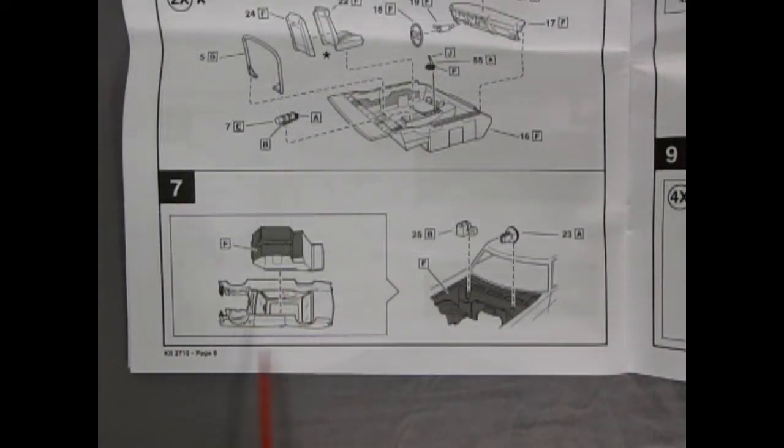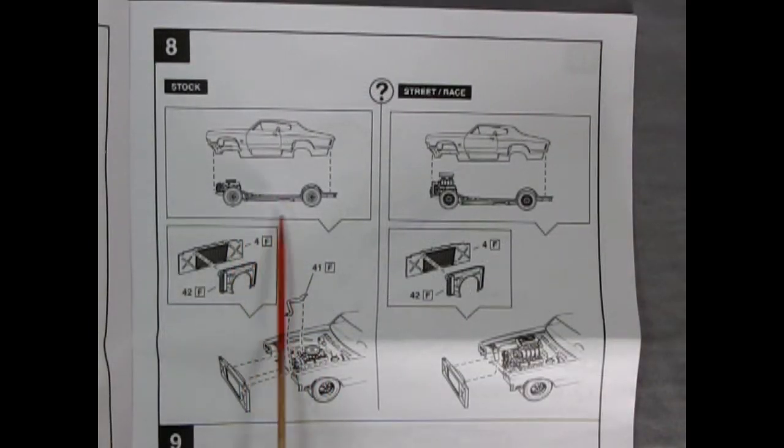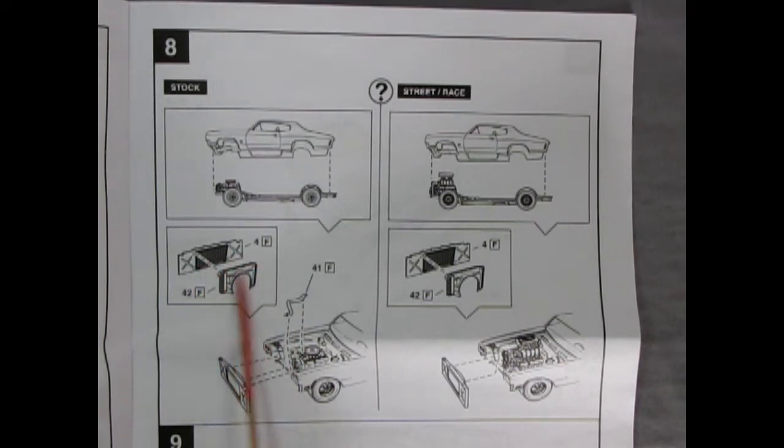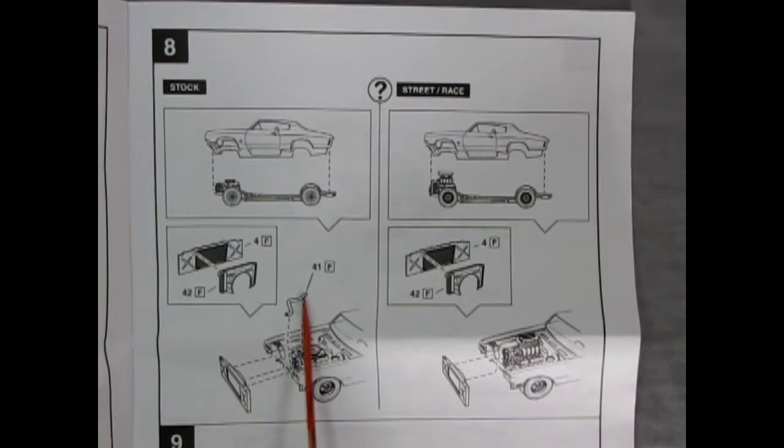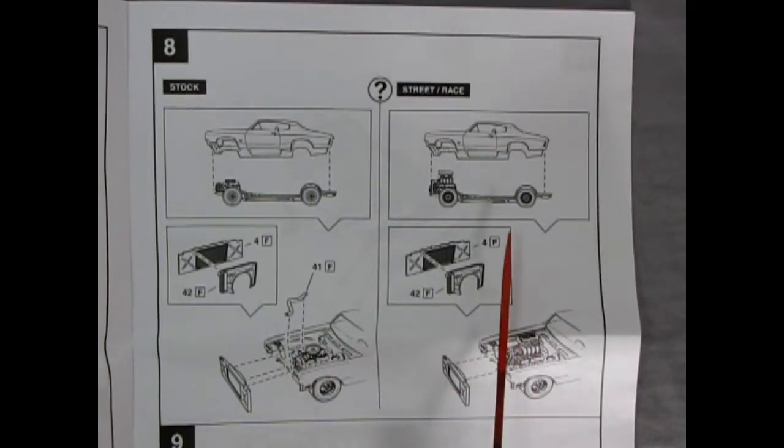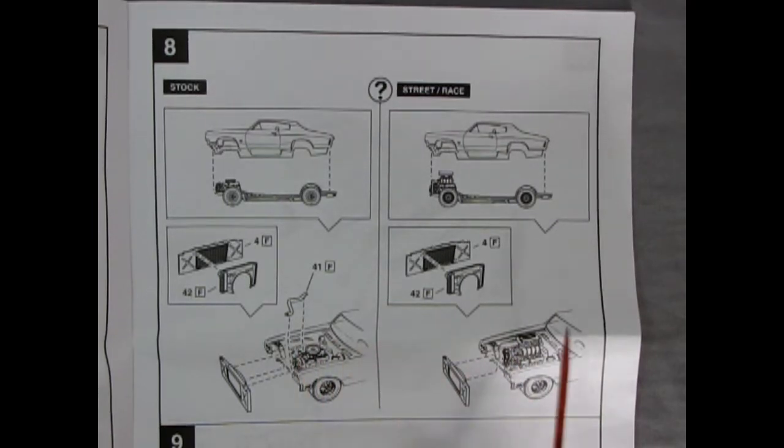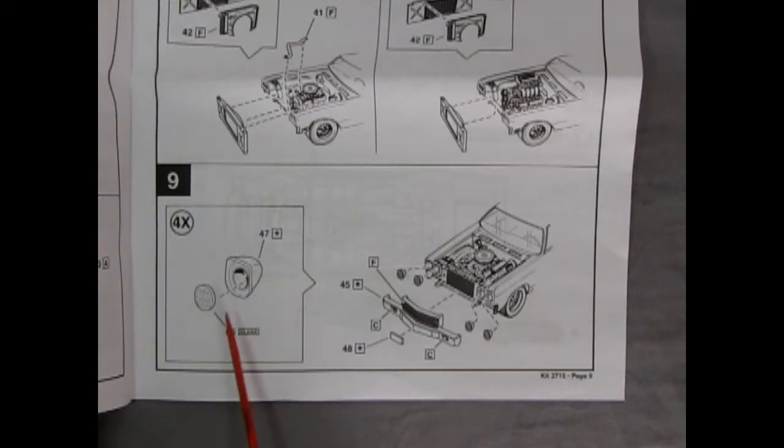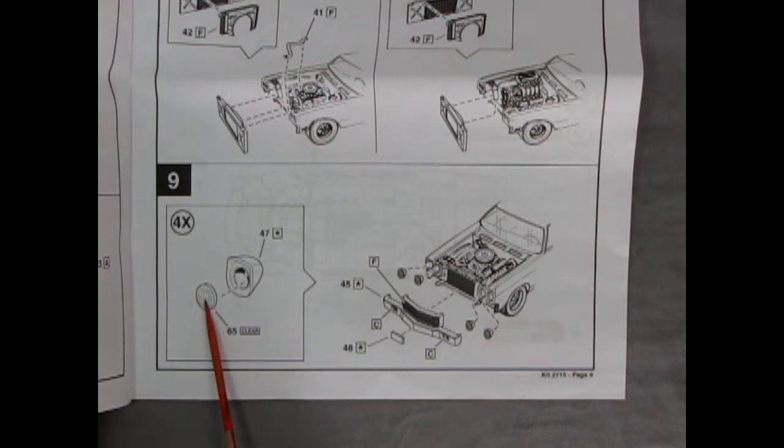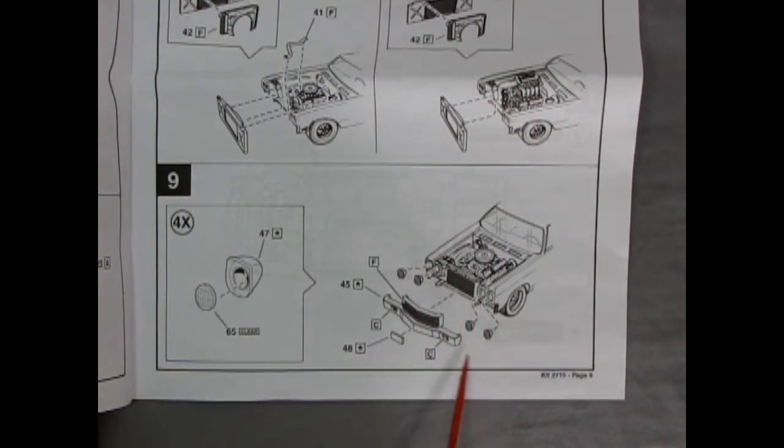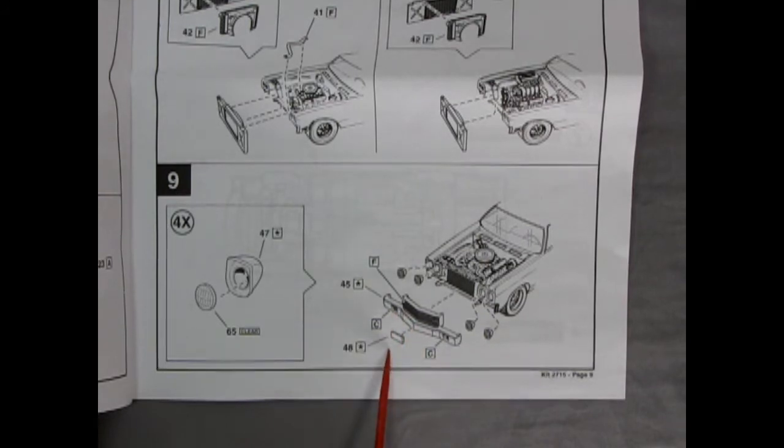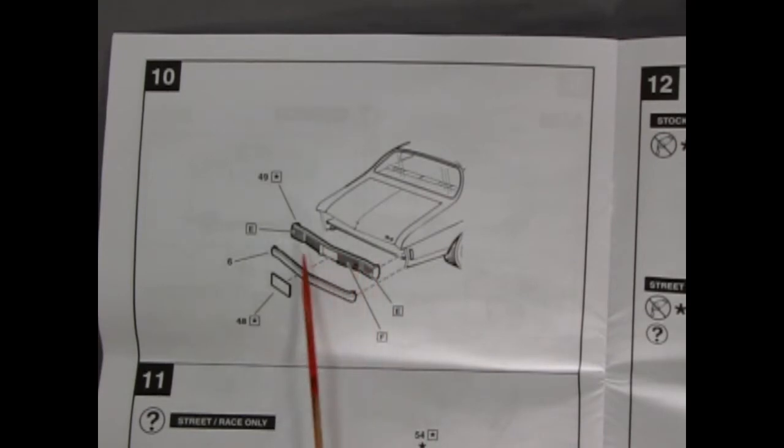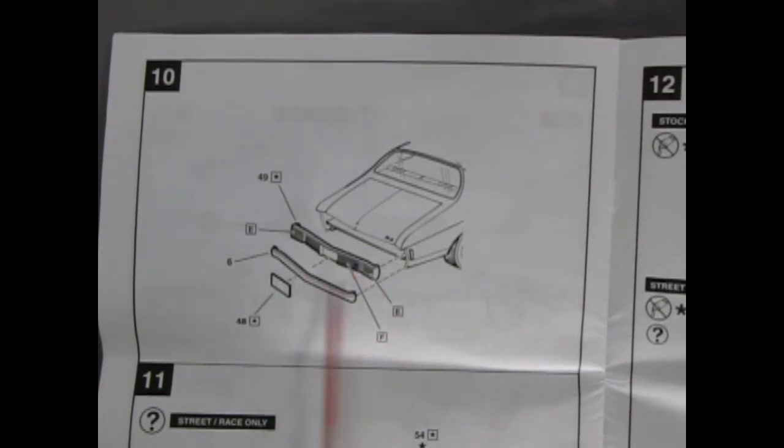Panel 7 shows our interior being dropped into the body. And then we've got our brake master cylinder and heater motor going in on our firewall. Panel 8 shows our stock body being dropped onto the chassis. Then our radiator and fan shroud going in at the front, as well as our radiator hose for our engine. The same is being done here on the dragster version except for there's no hose. Panel 9 shows our headlights, the chrome bezels going in, as well as our clear glass components, our bumper and our license plate.